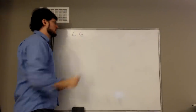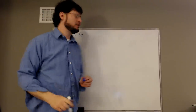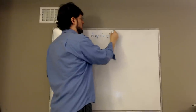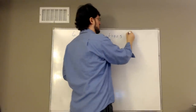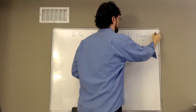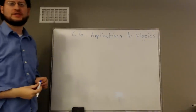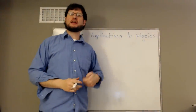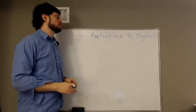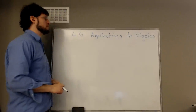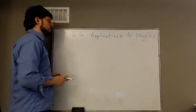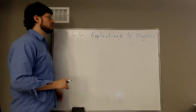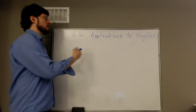Welcome back. Today we're going to look at section 6.6. This is a bit of a long section — there's lots of stuff going on in it. We're going to look at some of the starters. This is applications to physics, so some real-world applications of antiderivatives. Before we do that, we need to set up some of the basic language and recall some of the basic things about physics and how these things are related.